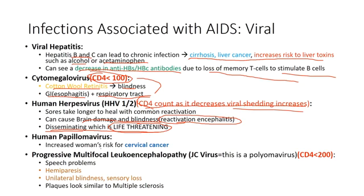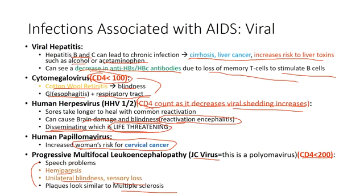Human papillomavirus is more associated with increased risk of cervical cancer in women, as T cells can no longer fight off the virus. Progressive multifocal leukoencephalopathy (PML) is caused by a polyomavirus called JC virus, occurring when CD4 is less than 20. It presents similarly to multiple sclerosis but persists — with hemiparesis, unilateral blindness, sensory loss, and speech problems. If you see neurological problems plus HIV or IV drug use history, think of PML.